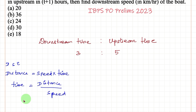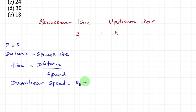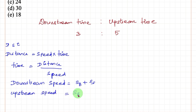Speed in the case of downstream is: downstream speed equals speed of the boat plus speed of the stream. Whereas upstream speed equals speed of the boat minus speed of the stream. So we are substituting all these values.